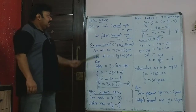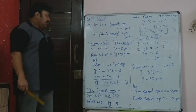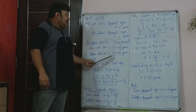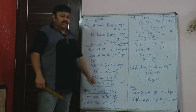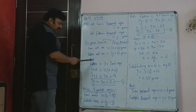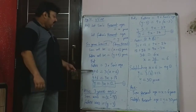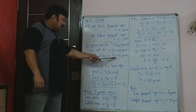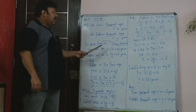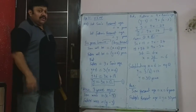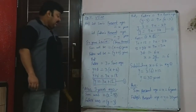6 years hence means after today. The son's age will be x plus 6 and the father's age will be y plus 6. It is given that the father will be 3 times the son's age 6 years hence: y plus 6 equals 3 times (x plus 6). Framing this gives equation 1: y equals 3x plus 12.